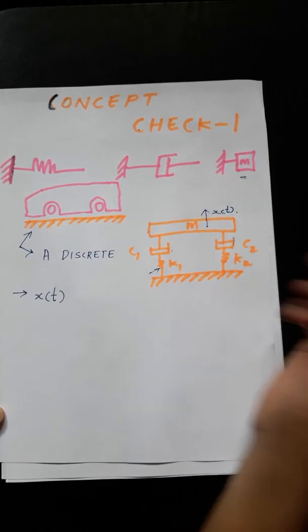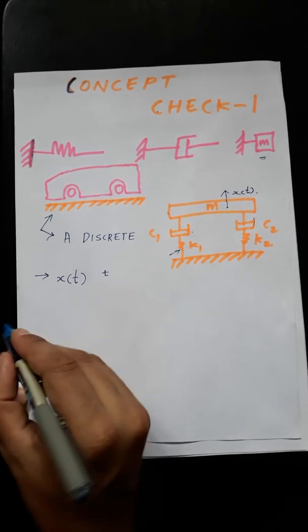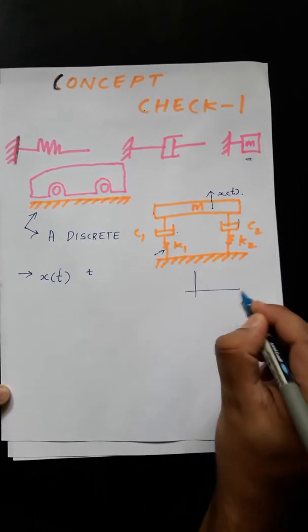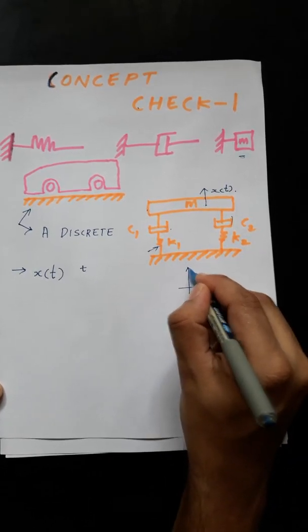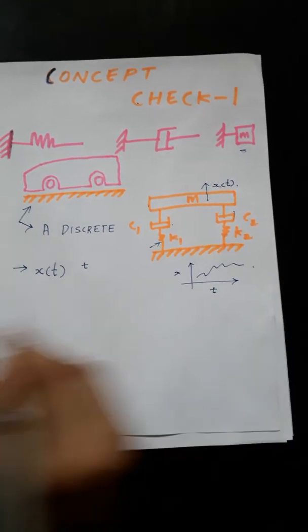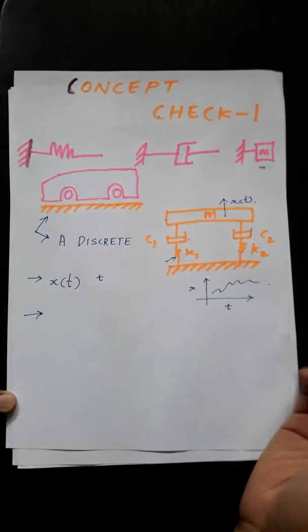So this is a discrete model and second thing, what we are finally trying to figure out. For any vibrating system we are trying to figure out the displacement or the response of one point. Let's say how much your vehicle is moving up if I define x of t like this with respect to time.